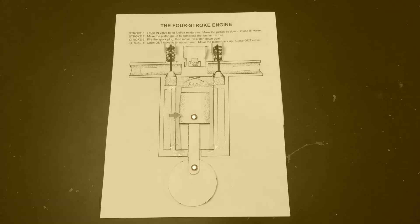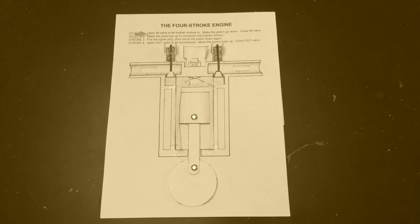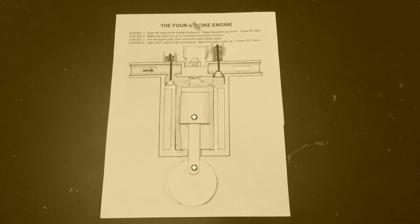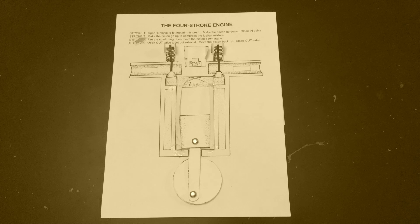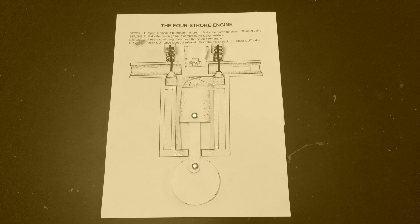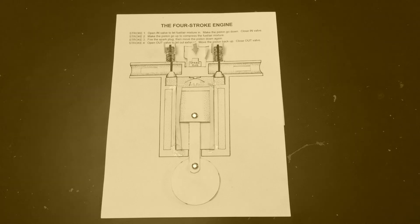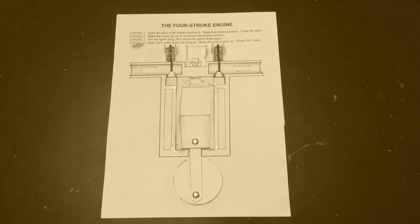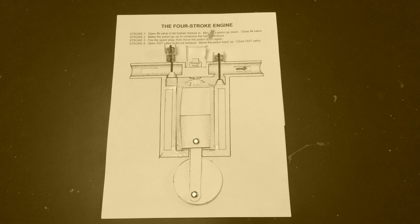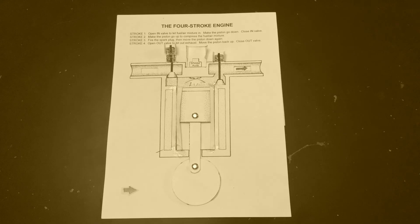This is the piston, which goes up and down. There's an inlet valve, spark plug, and outlet valve. Open the inlet valve to let the fuel-air mixture in, making the piston go down. Close the valves, and the piston goes up to compress the fuel-air mixture. Fire the spark plug to make the piston go down again. Open the outlet valve to let out the exhaust as the piston moves back up. Let's see that again.